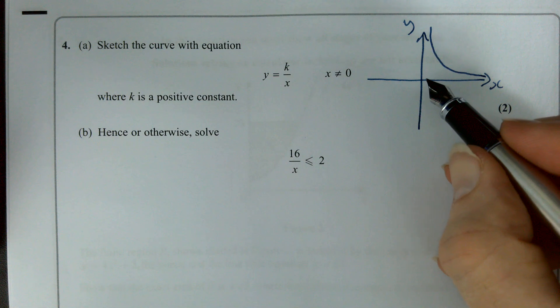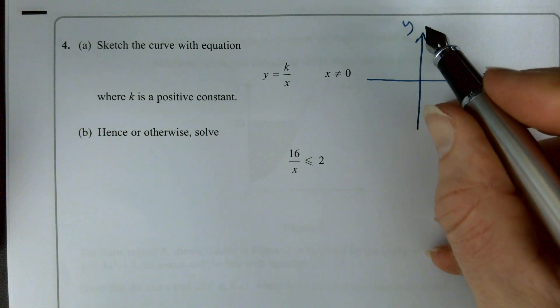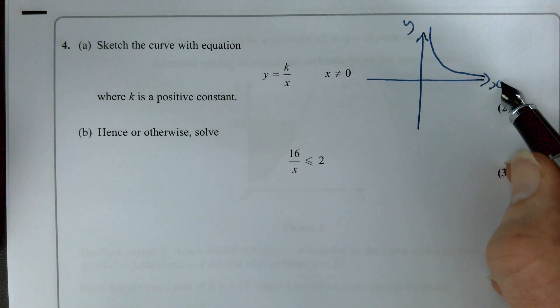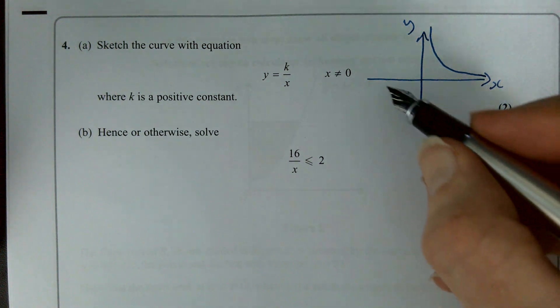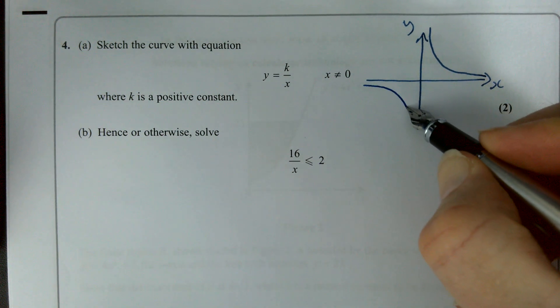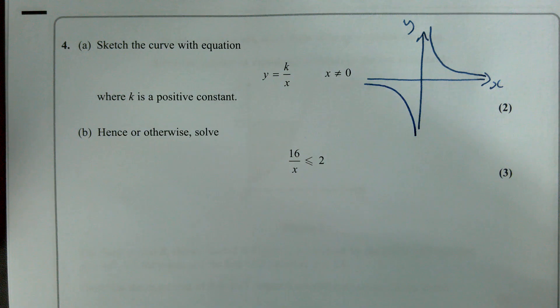As your value for x approaches 0, your value for y approaches infinity. As your value for x approaches infinity, your value for y approaches 0. But you've also got the negatives doing something like that there.